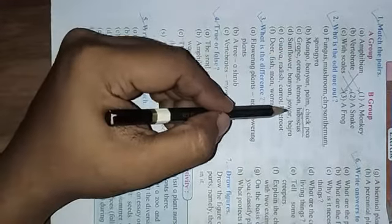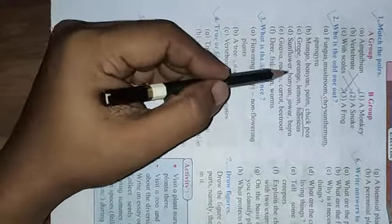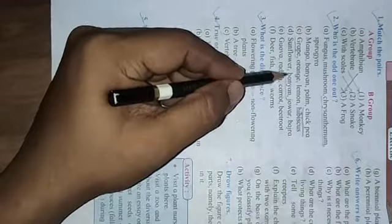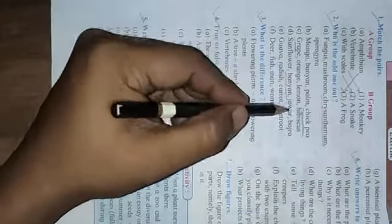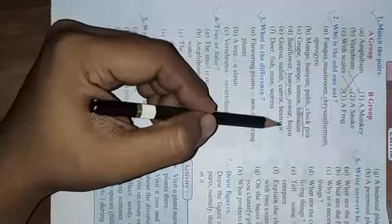Sunflower, banyan, jowar, bajra. Okay? So sunflower, jowar, bajra. This banyan tree is perennial tree. Their life is more than one year. Guava, radish, carrot, beetroot. Which is there? Guava.